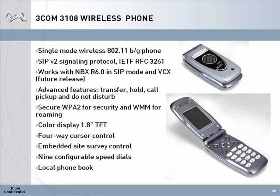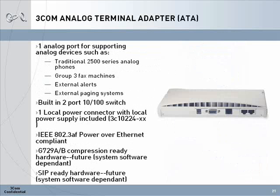The 3108 wireless phone is an 802.11 B/G compliant device. It interoperates with an IP telephony system using the Session Initiation Protocol, or SIP. The 3108 phone will work with the NBX in release 6.0 in SIP mode. This phone has a small flip phone form factor, a 1.8 inch color screen, advanced PBX features, selectable ringtones, programmable speed dial buttons, and a 4-way cursor control. The 3108 also supports Wireless Protected Access 2 (WPA2) to ensure privacy.